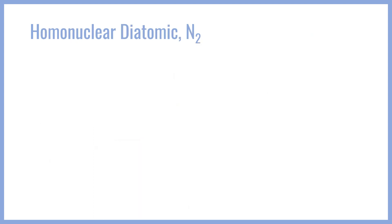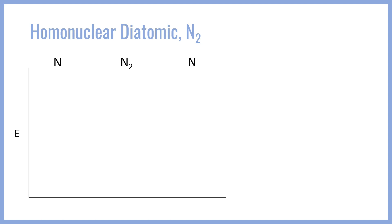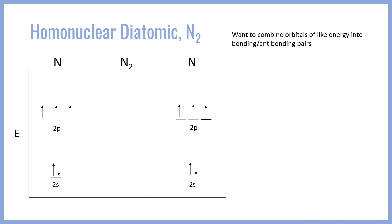Let's go ahead and jump straight into building the homonuclear diatomic molecule N2. We can outline the diagram and then work step by step to fill it in. Our first step is to fill out what the valence orbital structure looks like for each of the nitrogen atoms. Each nitrogen will have a filled 2s orbital and a half-filled p sublevel with one electron in each of the p orbitals x, y, and z. Now we want to combine molecular orbitals of like energies into bonding and antibonding pairs — that is the name of the game for molecular orbital theory.